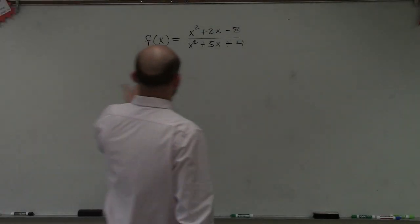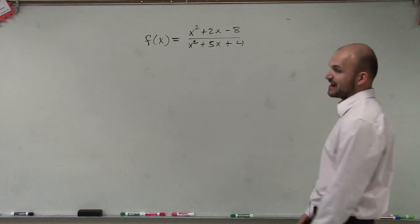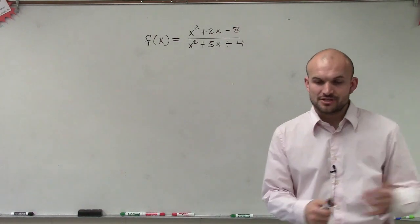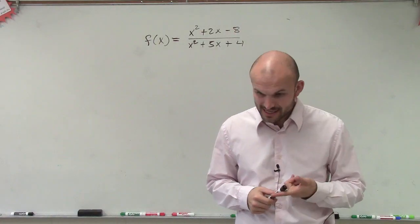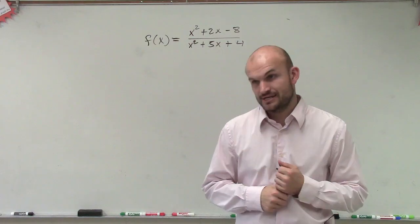Let's say for this problem I have f of x equals x squared plus 2x minus 8 divided by x squared plus 5x plus 4. And let's say the question is asking, find the removable discontinuities, the non-removable discontinuities, the vertical asymptote, the horizontal asymptote, the domain, and the range.